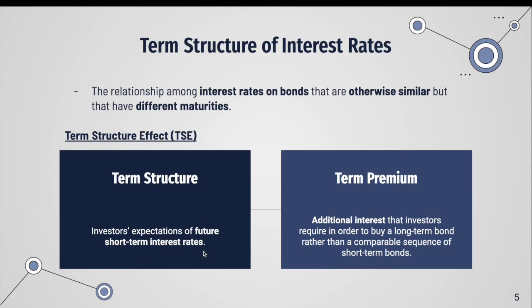Expectations of a future rise in short-term rates tend to increase current long-term rates. Additionally, when interest rates fluctuate, so do the prices of bonds, potentially causing losses to investors. The term premium is the additional interest that investors require in order to buy a long-term bond rather than a comparable sequence of short-term bonds — in other words, to compensate lenders for the possibility that interest rates will change while they hold the long-term bond.